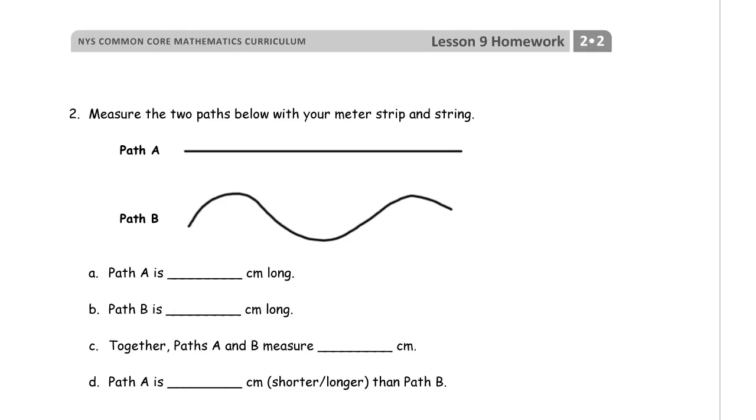Let's go on to the next page. On this page we have to measure the two paths below with your meter strip and string. Now, you can do this with, if your meter strip is made out of paper. Paper is pretty bendy. You can use that to measure the curvy path B. You can use a piece of string and put it on top of the curvy line and then straighten it out and measure it with a ruler. You can also use some kind of a cord or a cable. You can use a charging cable for a phone, but you don't cut it. Don't cut it.